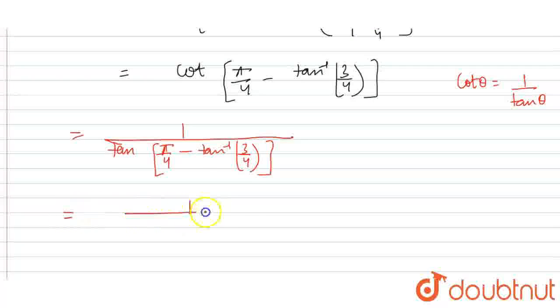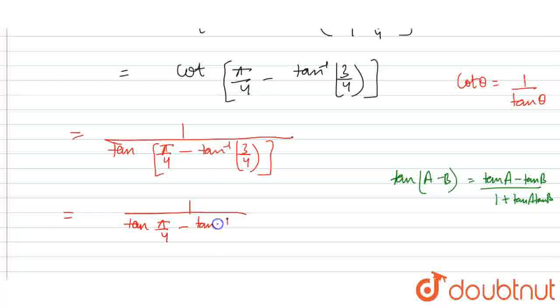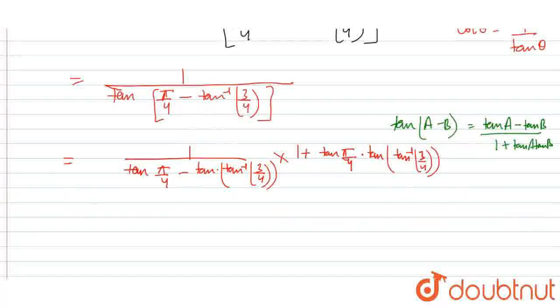Now, this is going to equal 1 upon... We know there is a formula of tan A minus B, which says that tan A minus tan B upon 1 plus tan A tan B. So, we are going to apply it over here only. So, here I am going to get tan A minus B. So, it is tan A minus tan of tan inverse 3/4, whole in multiplication with 1 plus tan pi/4 multiplied by tan of tan inverse 3/4.